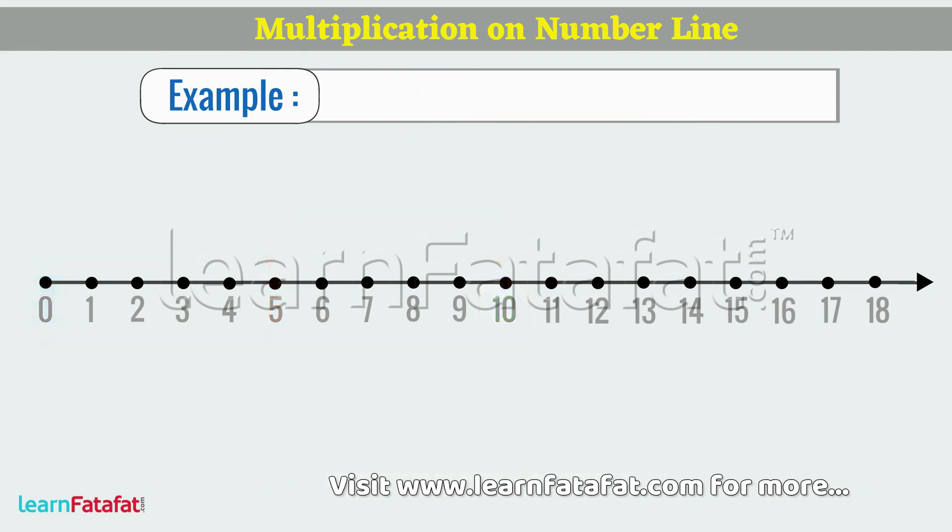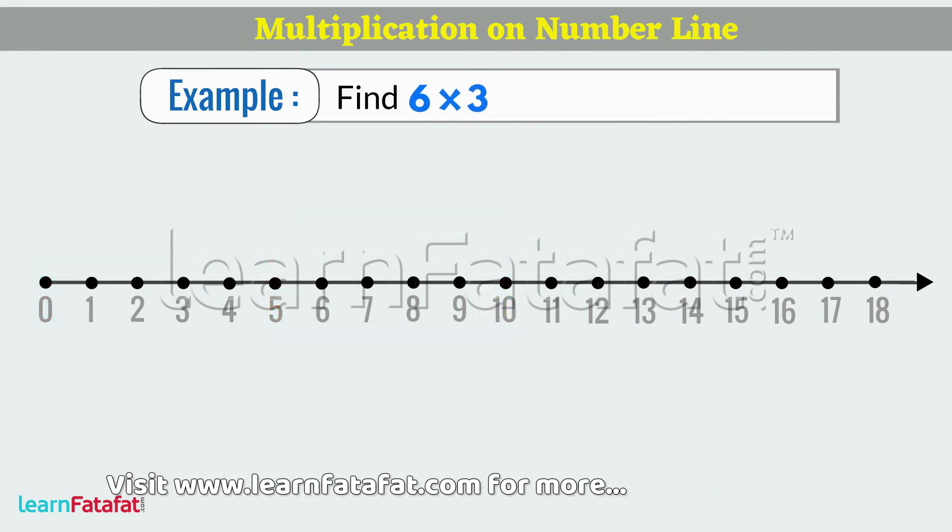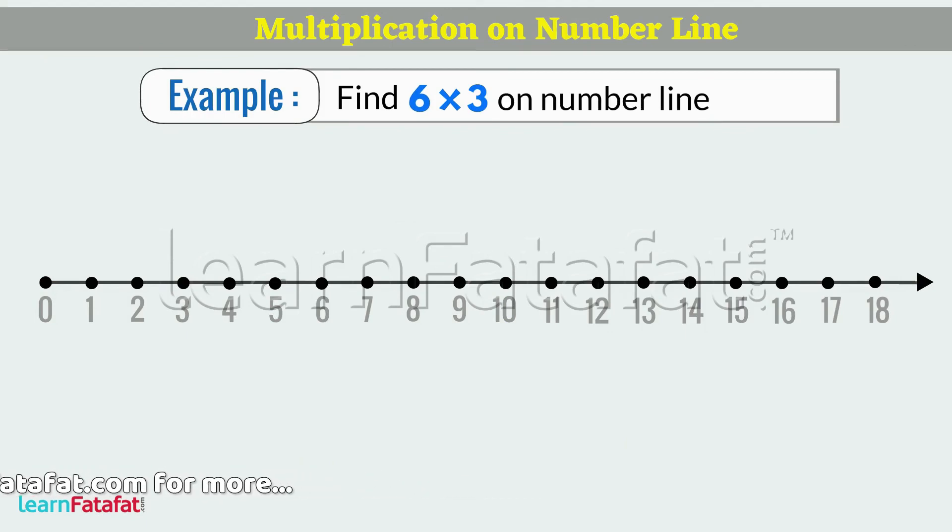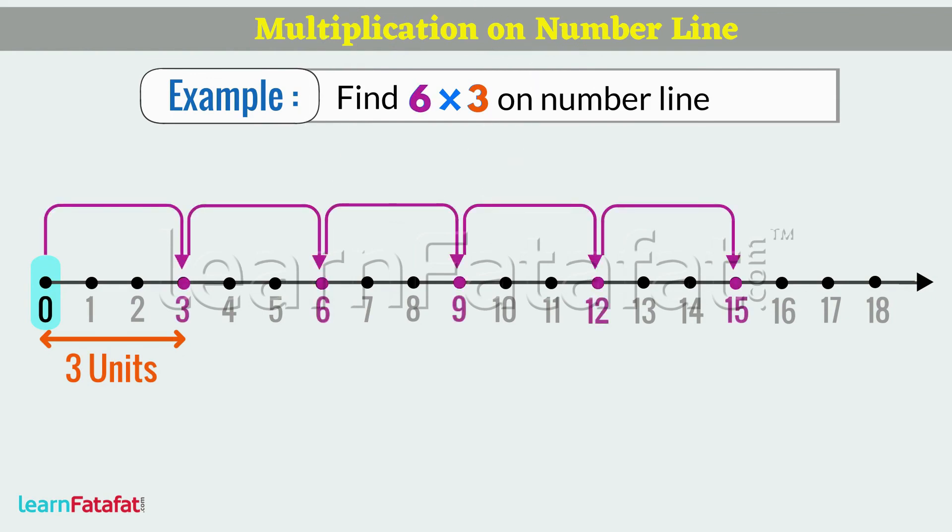Next Example: find 6 multiplied by 3 on Number Line. Locate 0. Move 3 units at a time to the right and make 6 jumps. Answer is 18.